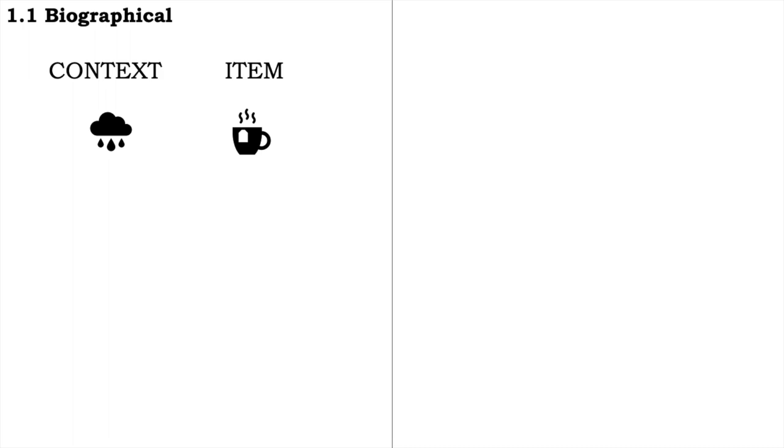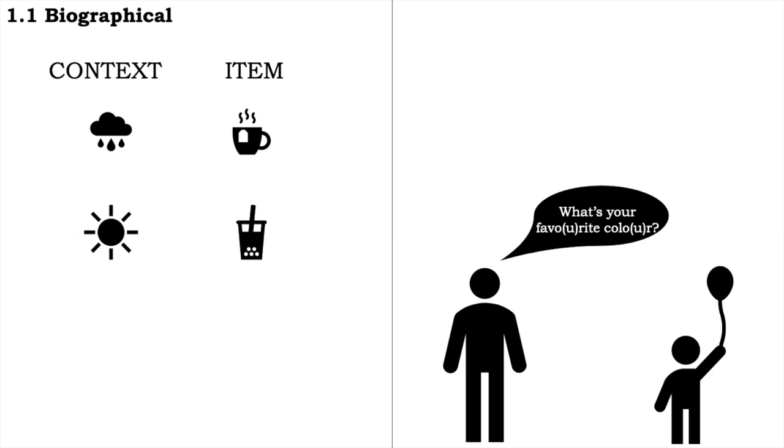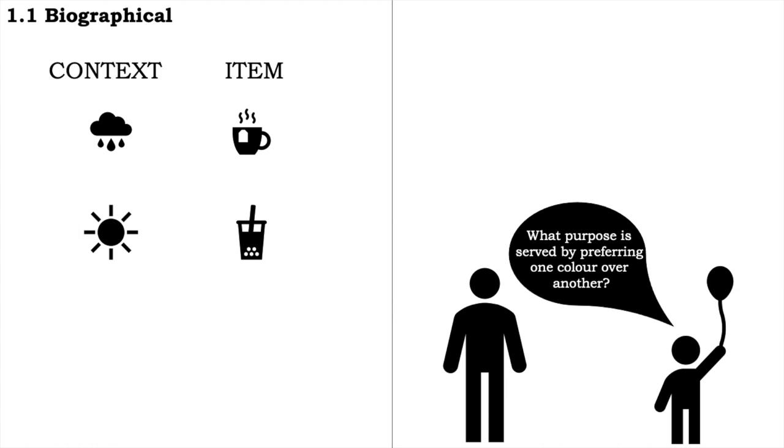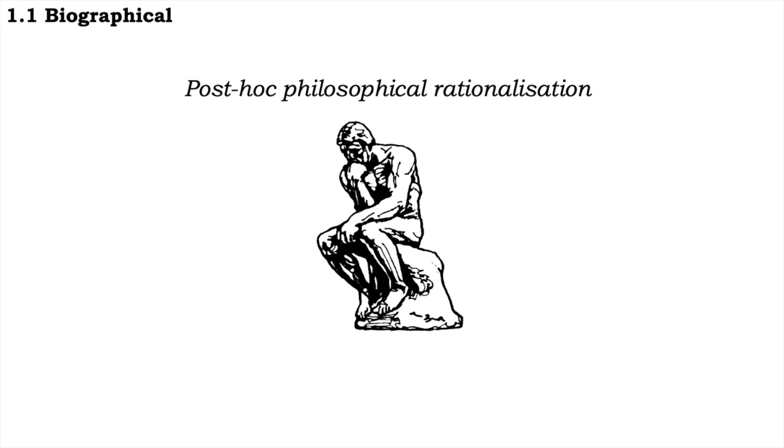And I don't have a hierarchy of what things I like best compared to others. As a child, when people asked me what my favourite colour was, I would say, what purpose is served by preferring one colour over another? Or, my favourite colour for what? For my walls? My clothes? Your clothes?